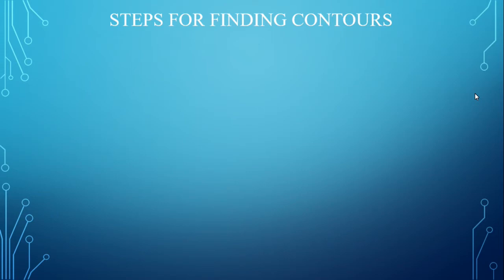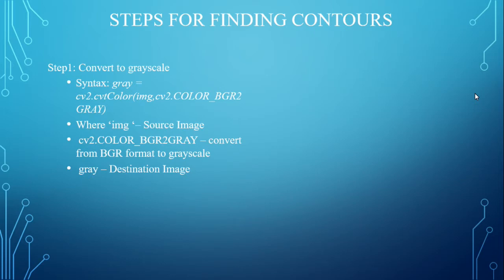Step 1 is to convert to grayscale, since grayscale is used to obtain the binary image. The syntax is: gray = cv2.cvtColor(img, cv2.COLOR_BGR2GRAY), where img is the source image, cv2.COLOR_BGR2GRAY is used to convert the BGR image to grayscale, and gray is the destination image.